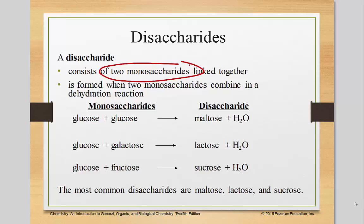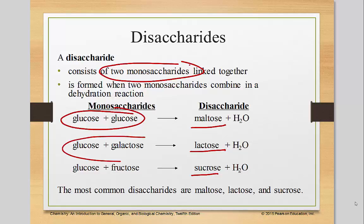Those three disaccharides are maltose, lactose, and sucrose. Maltose is glucose and glucose. Lactose is glucose and galactose, whereas sucrose is glucose and fructose.